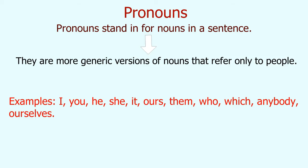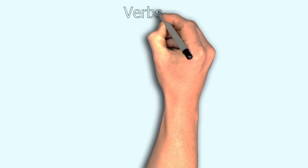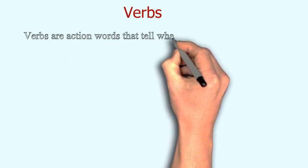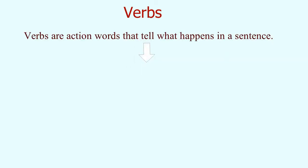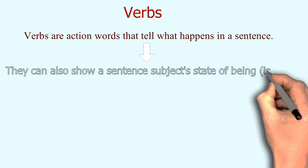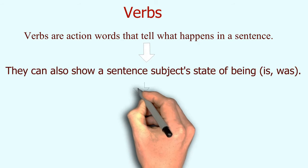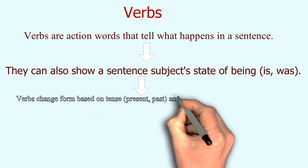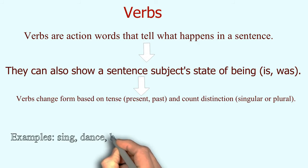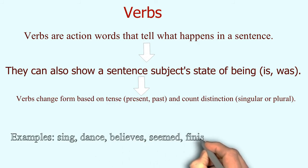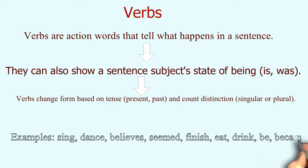Verbs are basically action words which represent the action of something or the state of something — how something is or was. So both action and state can be presented through verbs. Verbs change their form depending on the form of sentence in which they are used — present tense has one form, past tense has another, and similarly for singular and plural. For example: 'go' for plural and 'goes' for singular. Sing, dance, believe, seem, finish — these are all examples of verbs.